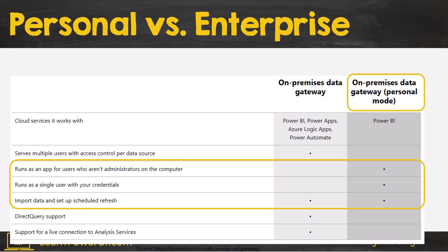The personal mode is meant to be used by one person — the model author. So if you're the model author, maybe the one Power BI superhero in your team, and you have tens, hundreds, or even thousands of users using your reports, that's fine. The one author can install Power BI gateway in personal mode to refresh their own models, and as many users as have access can then use those reports.